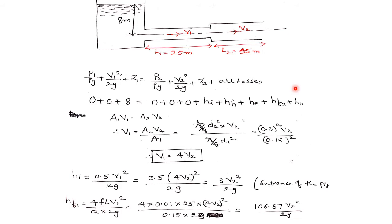Since velocity V₁ is not given, we calculate it using the continuity equation: A₁V₁ = A₂V₂, therefore V₁ = (A₂/A₁) × V₂ = (π/4 × D₂²) / (π/4 × D₁²) × V₂. Substituting D₂ = 0.3 m and D₁ = 0.15 m: V₁ = (0.3² / 0.15²) × V₂ = 4V₂. So V₁ has been expressed in terms of V₂.